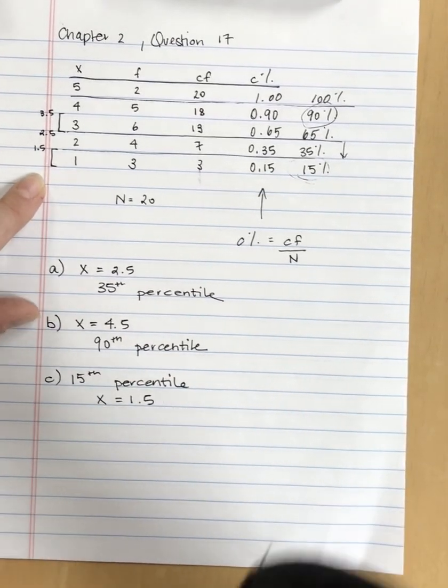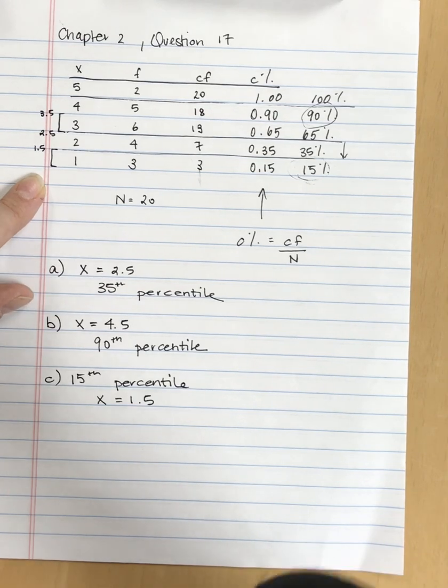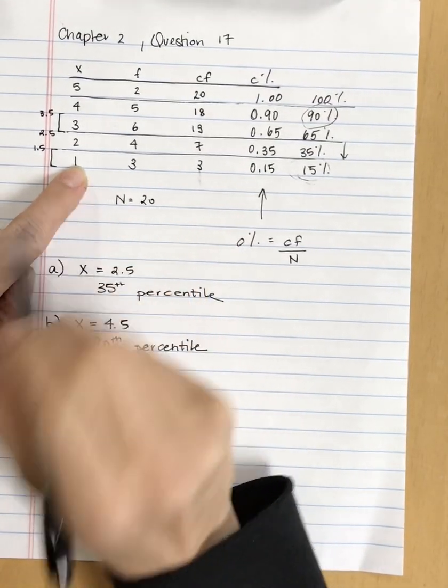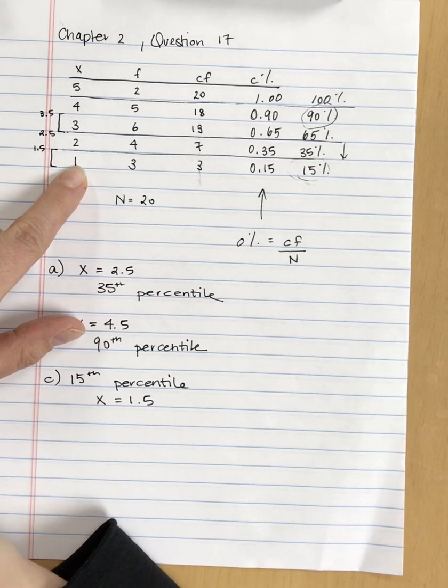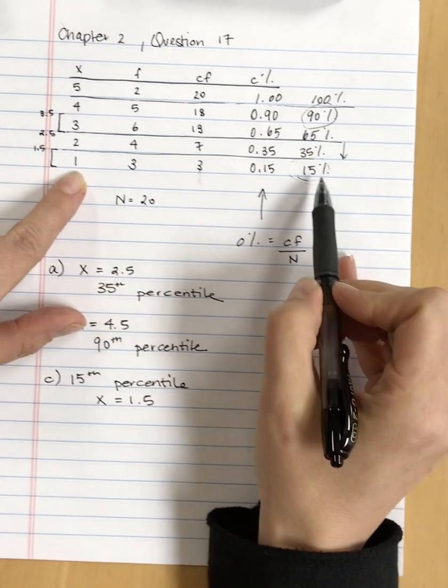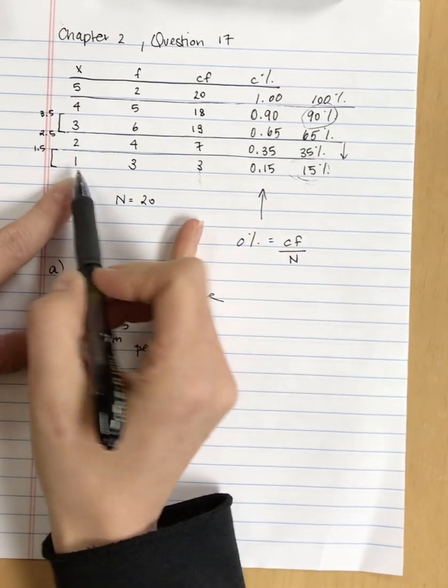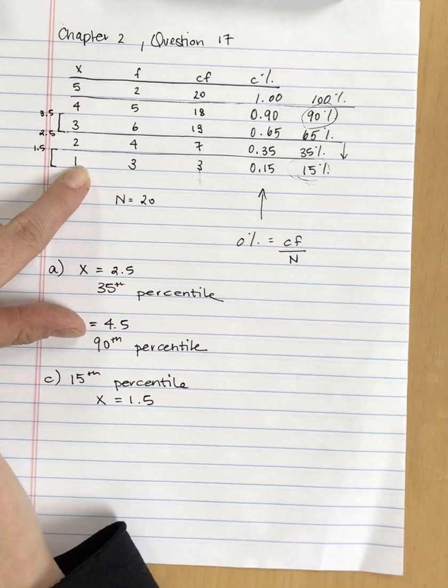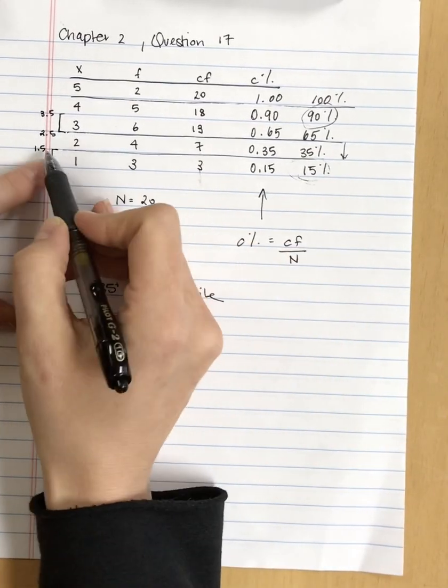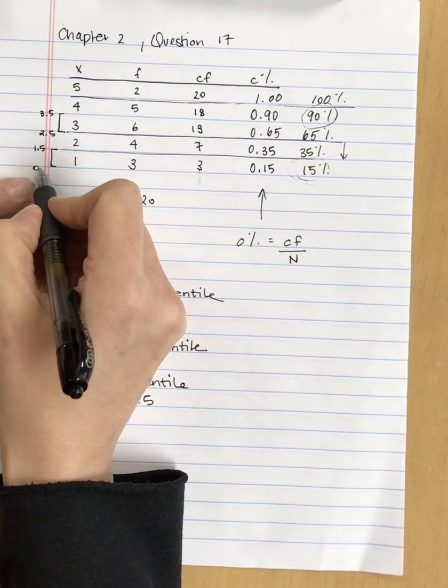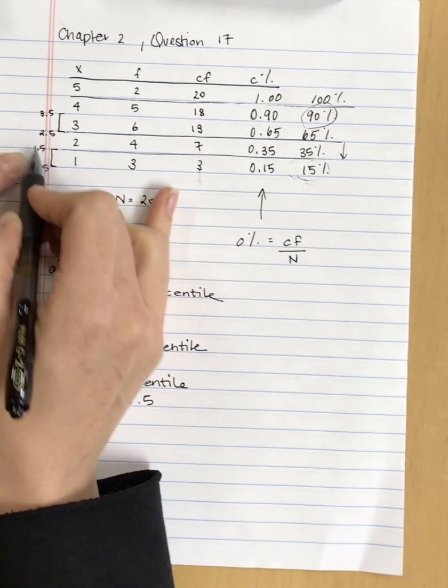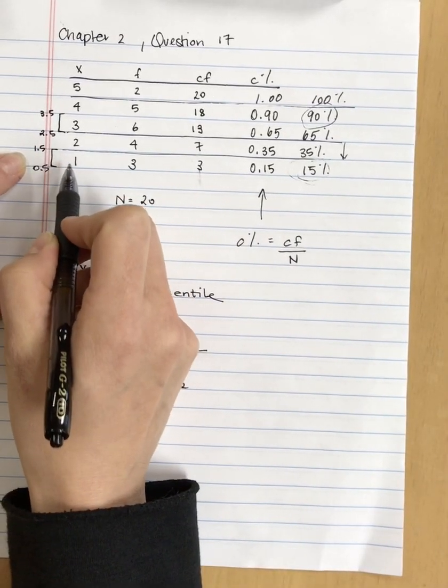Now, remember, it is associated with an x-score of 1.5 because 1.5 is the upper real limit of this interval. A frequent mistake that I see is that students see the 15, they read across, and they say that the x-score is 1. But that's not how this is. This interval goes from 0.5 to 1.5, and this 15th percentile is associated with the upper real limit of this interval.